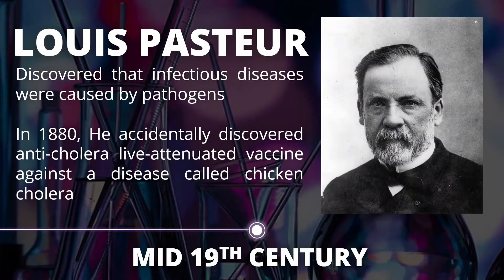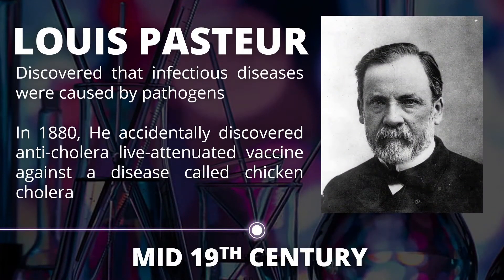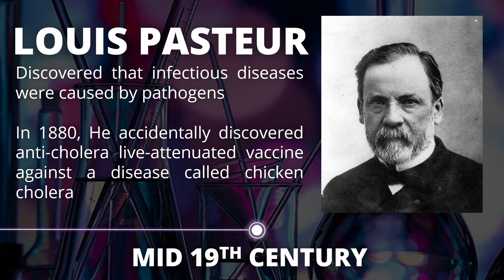Louis Pasteur discovered that infectious diseases were caused by pathogens. In 1880, he discovered an anti-cholera live attenuated vaccine against chicken cholera. After accidentally exposing chickens to the attenuated form of a culture, he demonstrated that they became resistant to the actual virus. He conducted the first documented experiment that proved the concept of artificial active immunity.